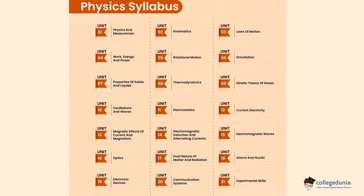The syllabus of JEE Main 2024 is based on NCERT Mathematics, Physics, and Chemistry curriculum for Classes 11th and 12th. Candidates can download the JEE Main 2024 syllabus PDF from the website jmain.nta.nic.in once released. The Physics syllabus includes a total of 21 units such as Physics and Measurement, Kinematics, Laws of Motion, Work Energy and Power, Rotational Motion, Gravitation, and more.